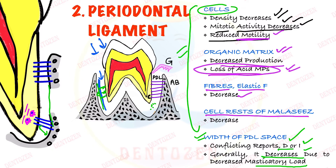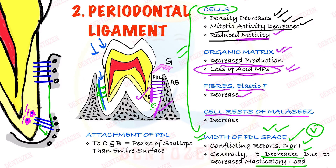Because masticatory forces decrease with age, there is less functional stimulation of the periodontal ligament, so it becomes narrow. That is an important point that can be asked as a viva question — what happens to the width of the PDL space? Also, the attachment of PDL changes with age: the surfaces of cementum and bone become rough, and PDL fibers are just attached to the peaks of the scallops on the cementum and bone.